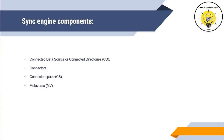Sync Engine has four components: connected data source or connected directories, connectors, connector space, and metaverse. These four components help Sync Engine to perform all the activities — whether synchronizing an object from Active Directory to Azure Active Directory, or syncing passwords from Azure Active Directory to on-premise. Now let's understand how each component works and how they help Azure AD Connect to sync information.